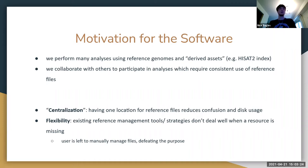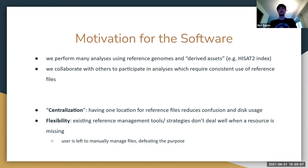Within our group, we do a lot of analysis using reference genomes and reference-based files. An example would be for the HiSAT aligner — it requires an index based on the FASTA file for whatever genome you're using, and numerous tools require similar things. In the paper, they refer to that kind of thing as derived assets. This is a common problem for us and other researchers.